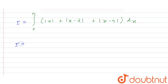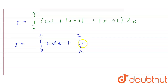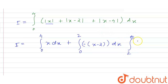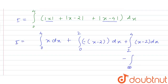So I is equal to: from 0 to 4, modulus of x will open with positive sign, so it will be plus x. From 0 to 2, modulus of x minus 2 will open with negative sign, so it will be minus of x minus 2. From 2 to 4, it opens with positive sign, plus of x minus 2. And from 0 to 4, modulus of x minus 4 opens with negative sign, so minus of x minus 4.